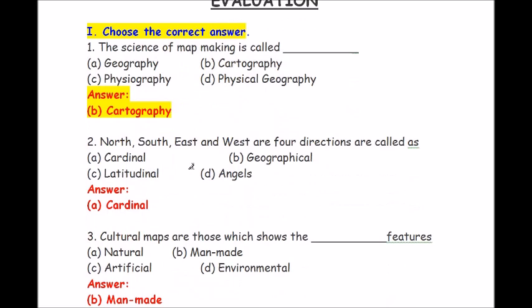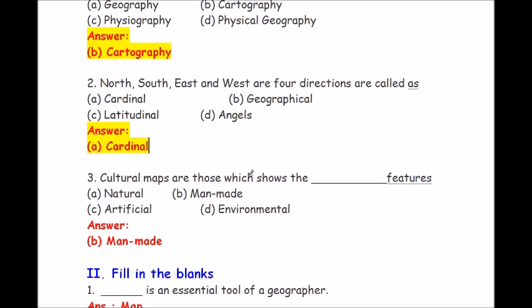Question number 2: north, south, east and west are four directions called as dash. Options are cardinal, geographical, latitudinal, angles. Answer is cardinal. North, south, east and west are called as cardinal directions.